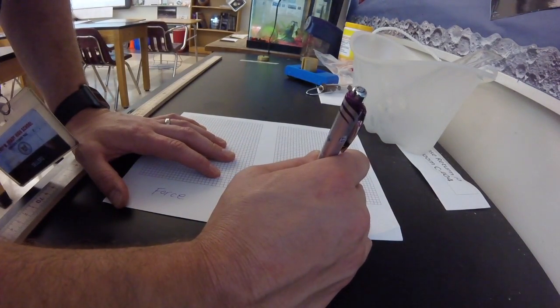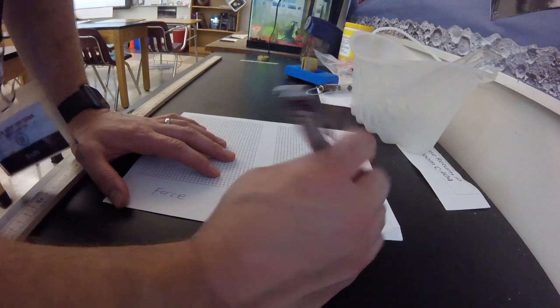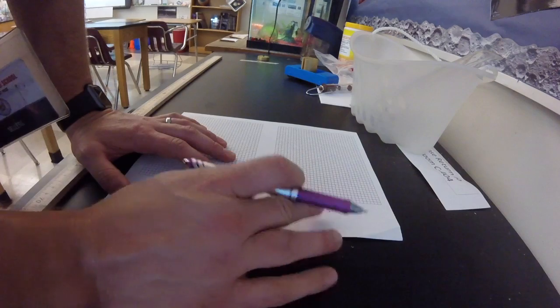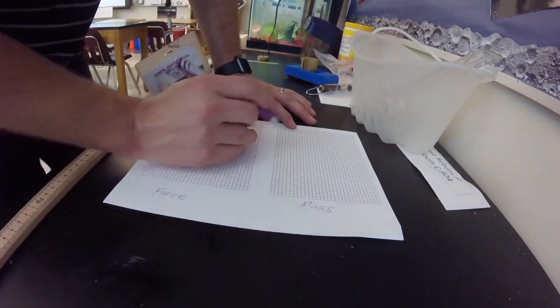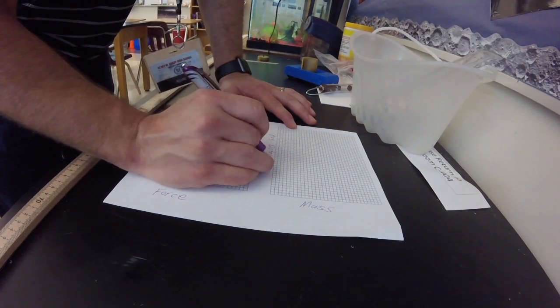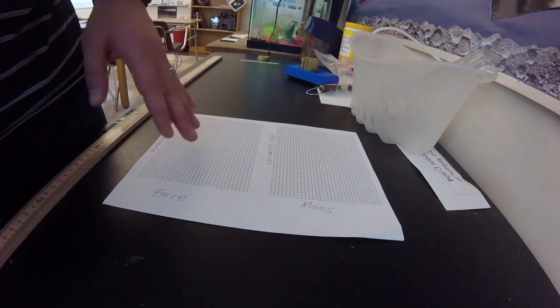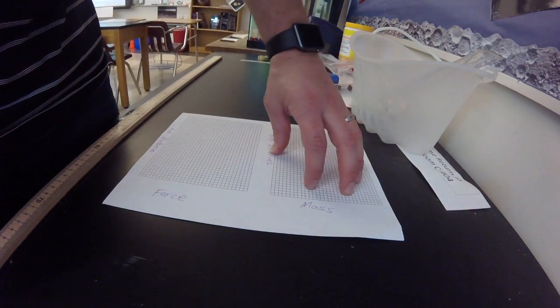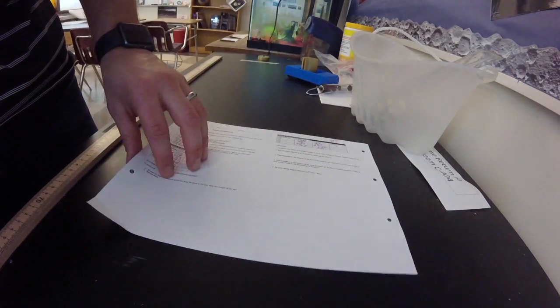On the second part of the lab, we changed the mass. Because we were changing the mass, that is the independent variable, so it goes on the x. What we were actually measuring was, again, the average distances. Average distances is the dependent variable on both graphs. You're going to make bar graphs. I'm not going to sit here and graph it for you, I know you know how to graph. You're going to make bar graphs with your average distances on your y-axis, and you'll have five bars for force and five bars for mass.